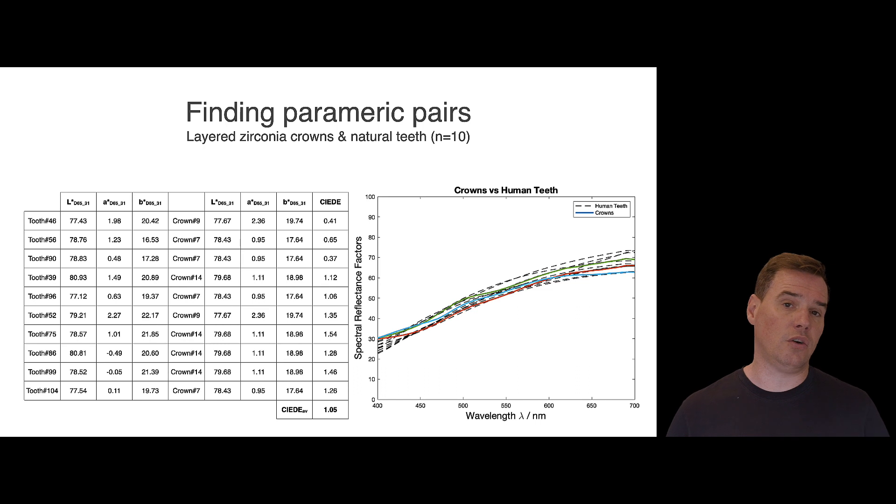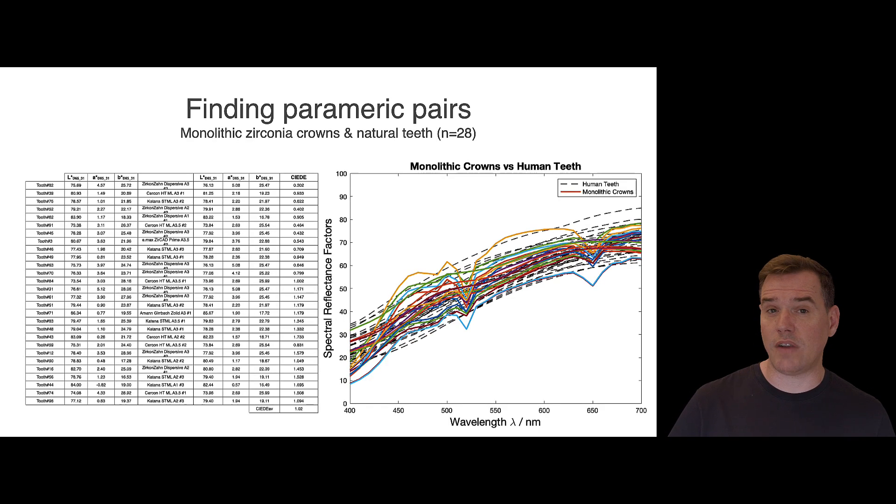And the cutoff threshold that we chose was 1.8, which is the threshold for clinical acceptability. So these were the 10 pairs of layered zirconia restorations and a closely matching maxillary central tooth, an extracted natural tooth. And these were the 28 pairs consisting of extracted teeth and the closest matching milled monolithic restoration that we included in our study.